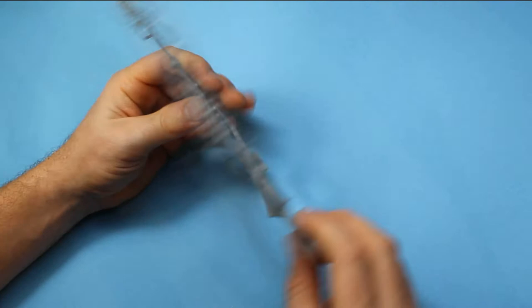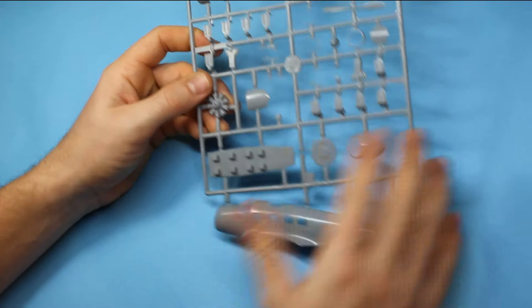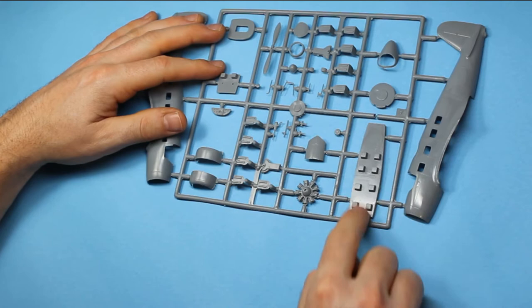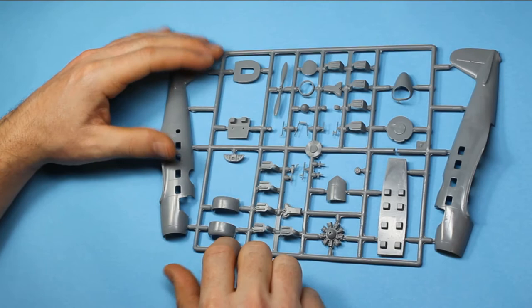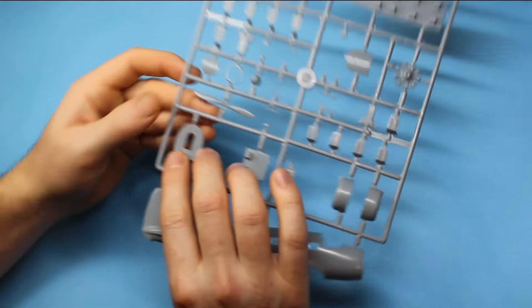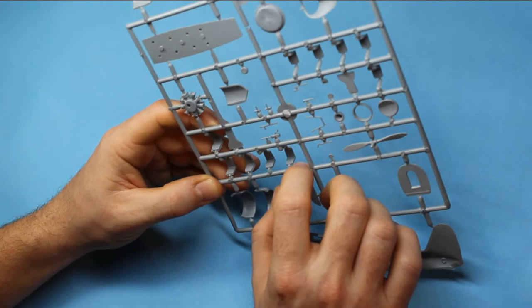So yeah no problem with that sprue and then the next sprue here is the two fuselage halves, again very fine recessed panel lines, no interior detail but that's to be expected with Azure kits, they usually just detail on one side. There's the interior floor here which is where the chairs are going to go for the passengers and then you've got the cockpit floor up here with two parts for the seats again and a rear wall with a door there. The seats have quite nice recessed detail there to give an impression of cushions.